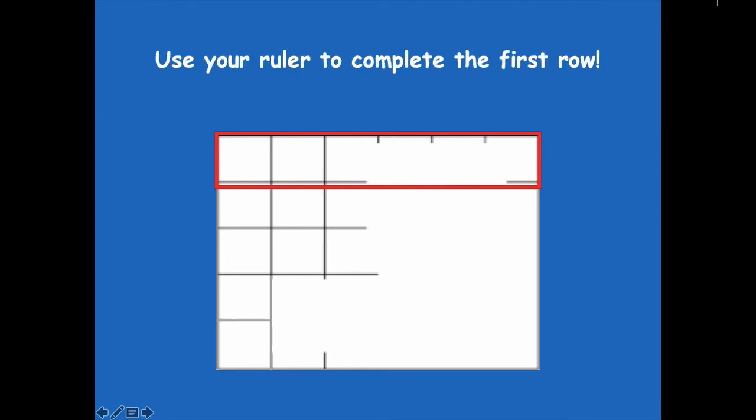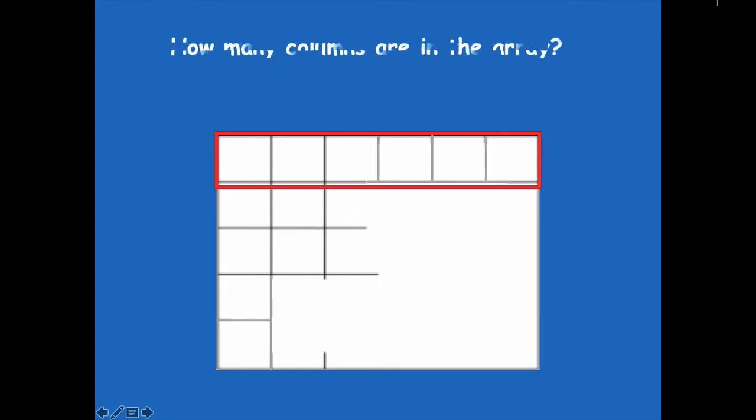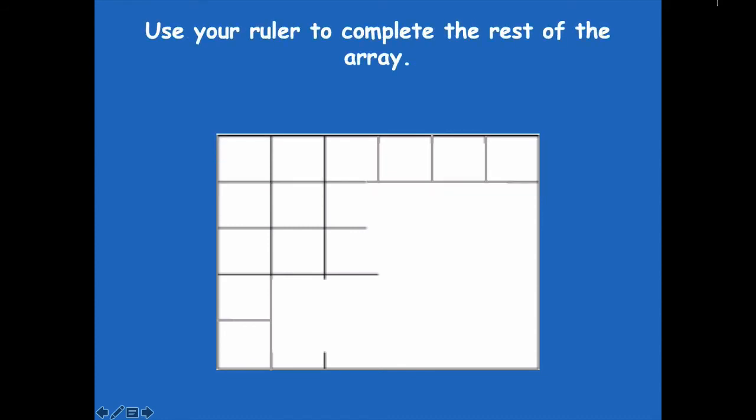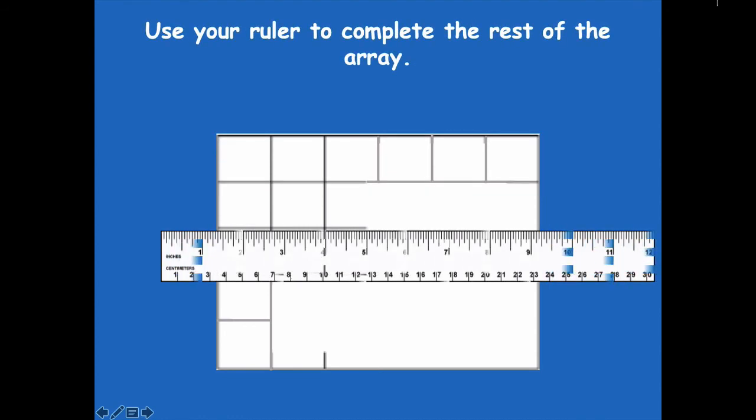So use your ruler to complete the first row. Go ahead and pause the video to do that. All right friends, so there's what I came up with. How many columns are in the array? Six. Use your ruler to complete the rest of the array. Remember you can do that by finding one of the lines that you know, putting your ruler next to it, and then drawing in that line.